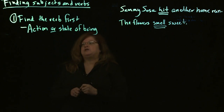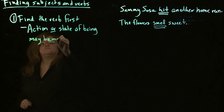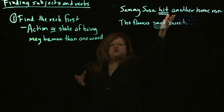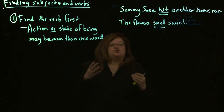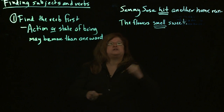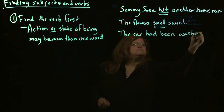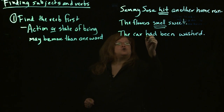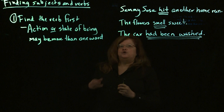Now, sometimes we want to watch out because the verb may be more than one word. Sometimes your verb is only just one word — 'hit' or 'smell.' But sometimes you may have a main verb plus some helping verbs, also known as auxiliaries. For example, 'the car had been washed.' In this case, we have a main verb 'washed,' but we also have two helping verbs: 'had' and 'been.' So the whole verb is all three of these words. When you're looking for the verb in a sentence, sometimes you may have some helping verbs.